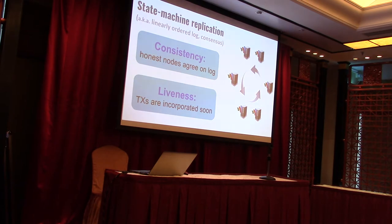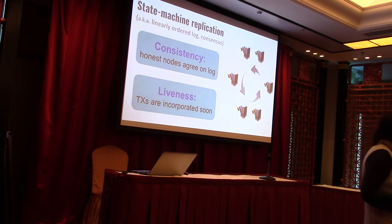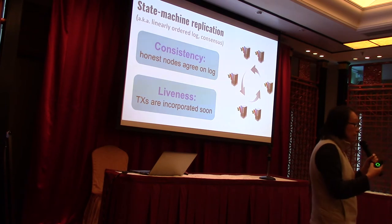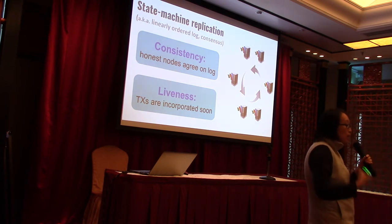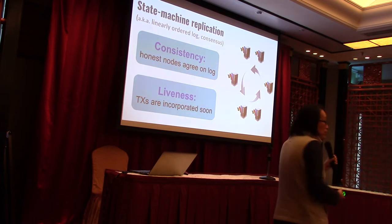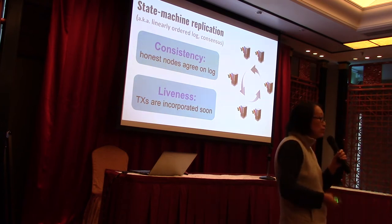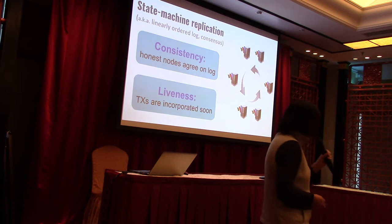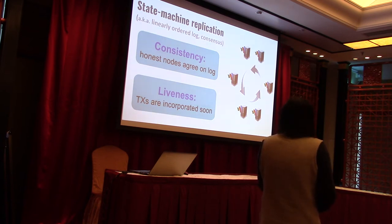In the beginning, this may seem deceptively simple. After all, what is difficult about reaching consensus on a linear order log? Indeed, the problem would be trivial if all the nodes are honest and behave correctly. But if a subset of these nodes can be corrupt and behave arbitrarily, then the problem becomes highly non-trivial — and that's why there's so much work in this space.